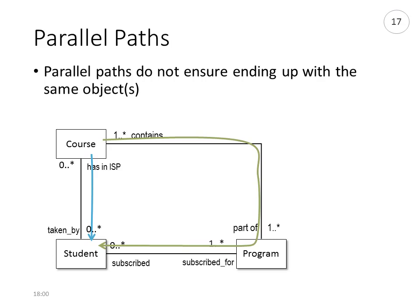Another thing to consider is that the UML class diagram may contain parallel paths to navigate from one class to another. We can navigate along the blue line from course to student, giving us the students subscribed in a course. We can also navigate along the green line — from course to all programs the course is part of, and then to all students of those programs. Navigating along the blue path will give you fewer students than navigating along the green path.